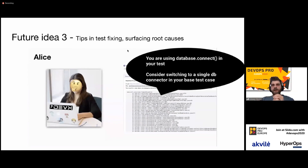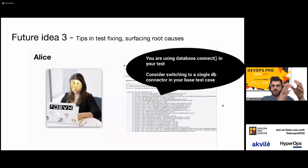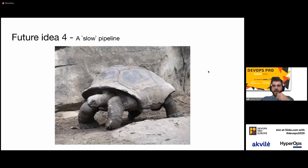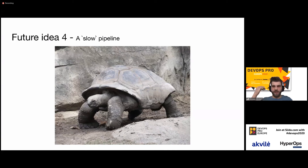We can take this even further and start surfacing to the developer common causes of flakiness in their tests. For example, if you're using a database connection in your test, we can suggest switching to a single database connector in your base test class instead of spinning up a database in each individual test case. Our final future idea is to have a slow pipeline, because in serial mode some tests may just be very slow and cause the whole pipeline to run for multiple hours. So we actually want to introduce a fourth, slow pipeline for very slow tests.